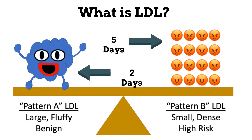It is very important to understand that LDL, called the bad one, has two types: Type A and Type B. Type A has a large pattern and is considered safe, while Type B has a small and dense pattern and is considered high risk. Type B stays in the body for five days and Type A stays for two days. Most heart strokes are related to Type B and not Type A.